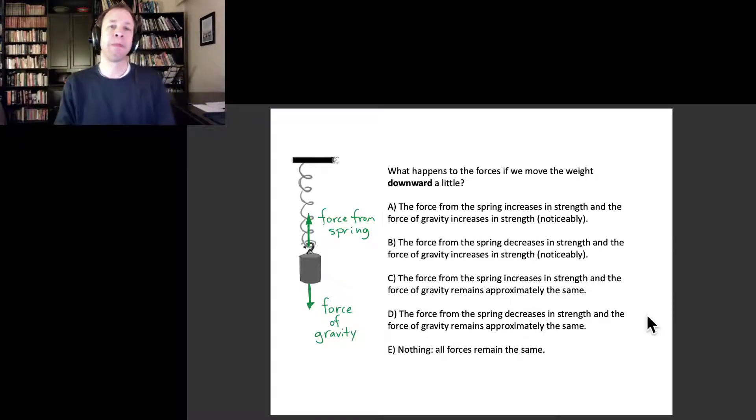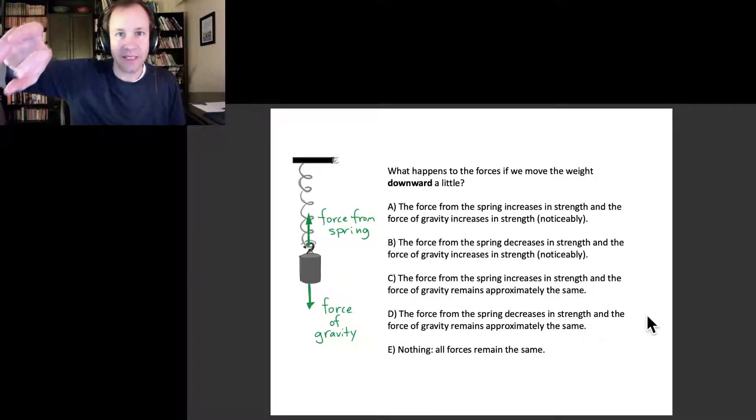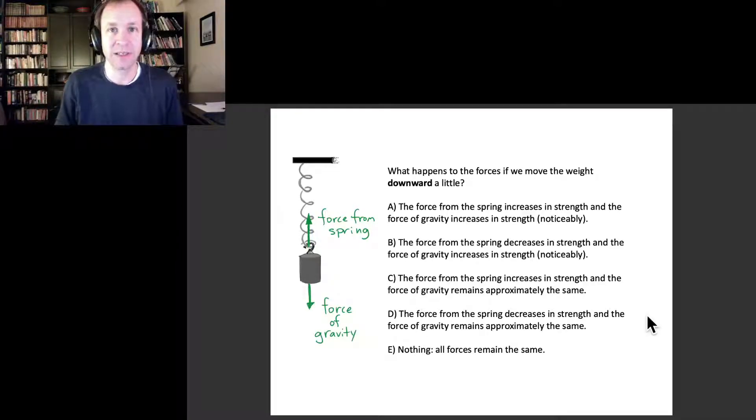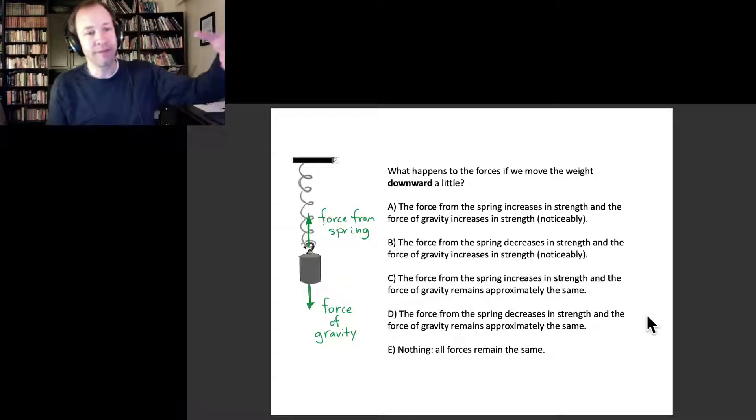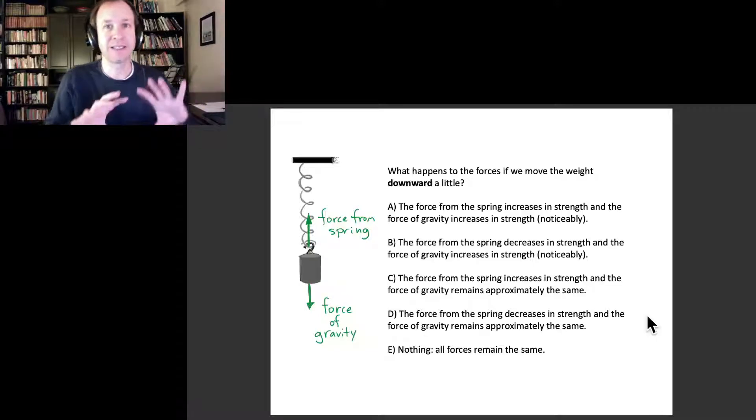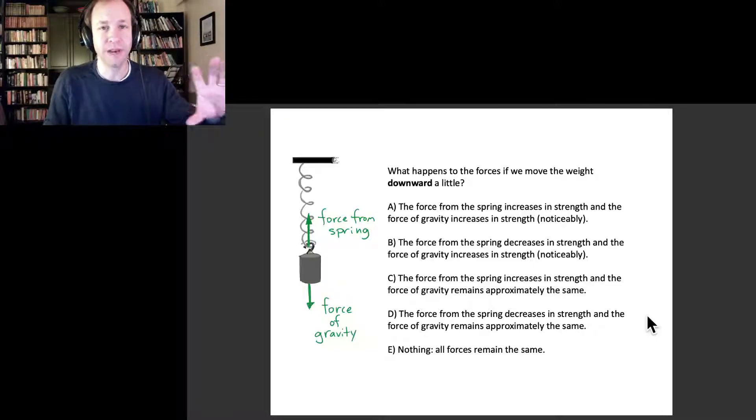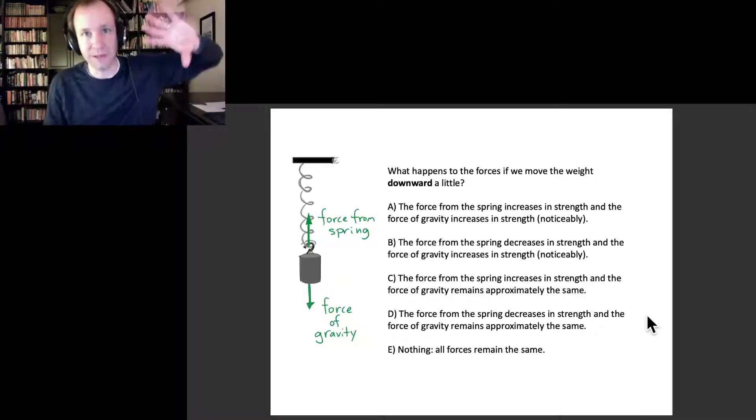Hopefully you've chosen one of these answers. Let's talk about the two forces in turn. First, the force of gravity. We talked about how the force of gravity near Earth's surface is the mass times the gravitational constant, 9.8 meters per second squared. That's the magnitude of the downward force. It's more or less the same everywhere. It doesn't matter if the object moves up or down—to a very good approximation, the force of gravity remains the same unless we go pretty far into space.